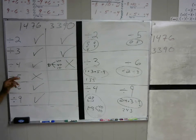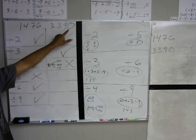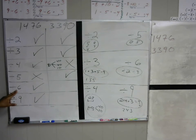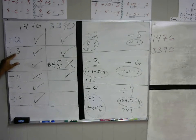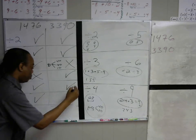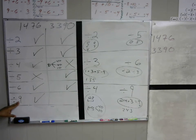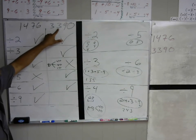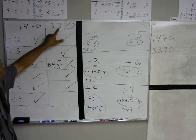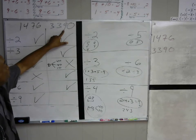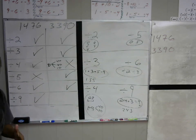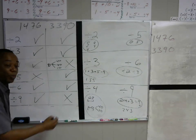Is 3390 divisible by 5? It ends in zero, so yes, it's divisible by 5. Is it divisible by 6? To be divisible by 6, it has to be divisible by 2 and 3, and it is, so we check that off. Is it divisible by 9? 3 plus 3 plus 9 plus 0: 3 plus 3 is 6, and 6 plus 9 is 15, and 15 plus 0 is still 15. 15 is definitely not in the nine times tables, so no, 3390 is not divisible by 9.